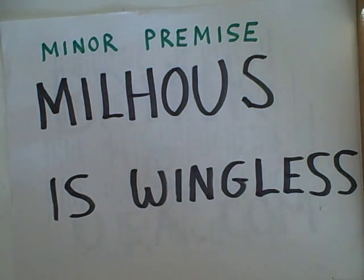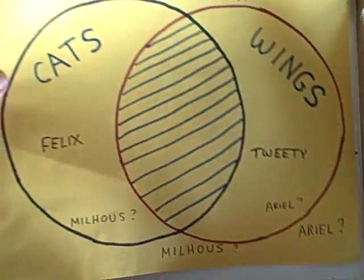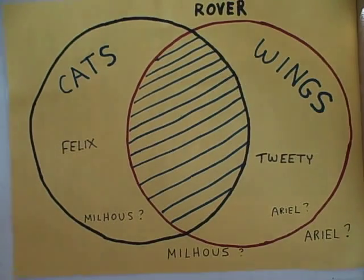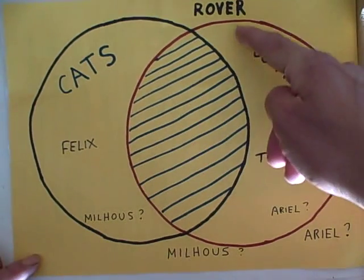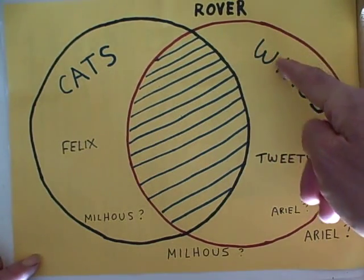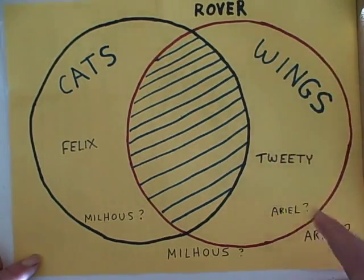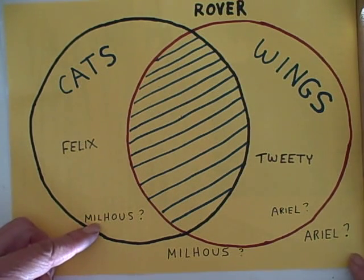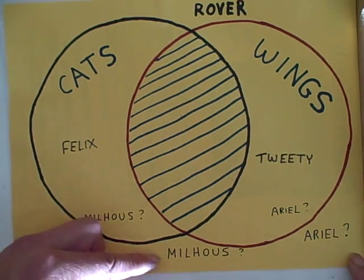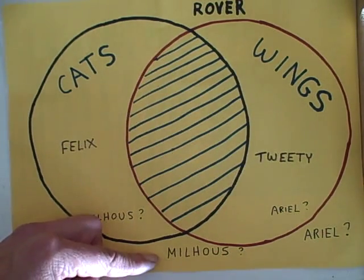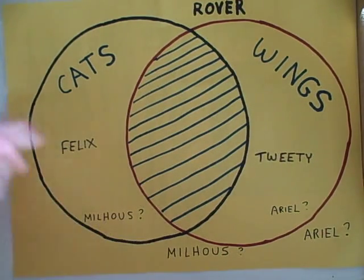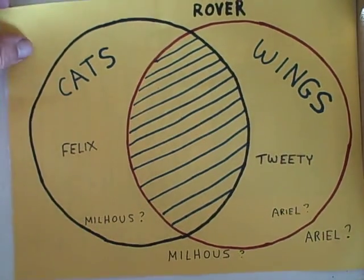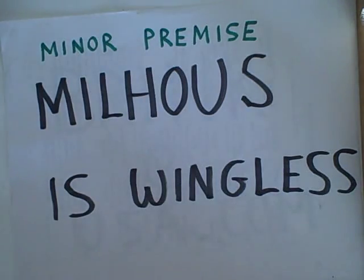Let's try one more: Milhouse is wingless. We don't know where to put Milhouse. We know he's not in this area. But is Milhouse here — is he a blue-haired cat? Or is Milhouse here — is he a boy? All we know about Milhouse is he does not have wings.